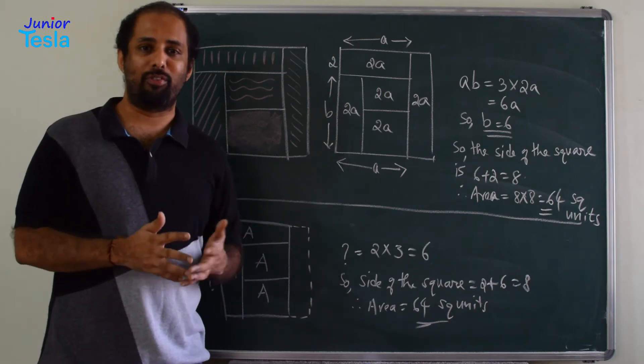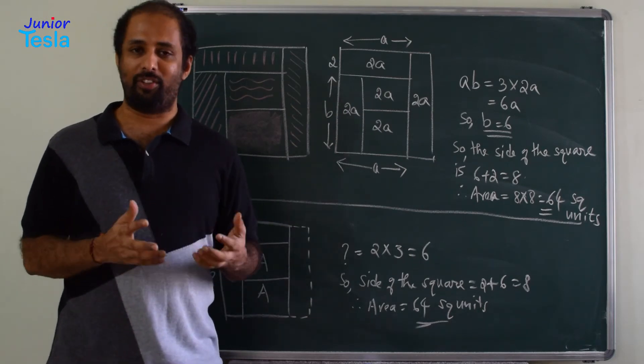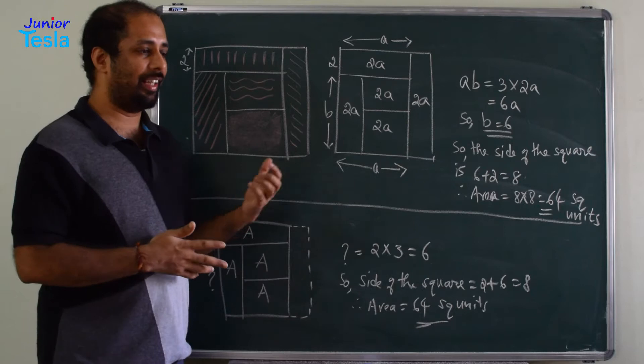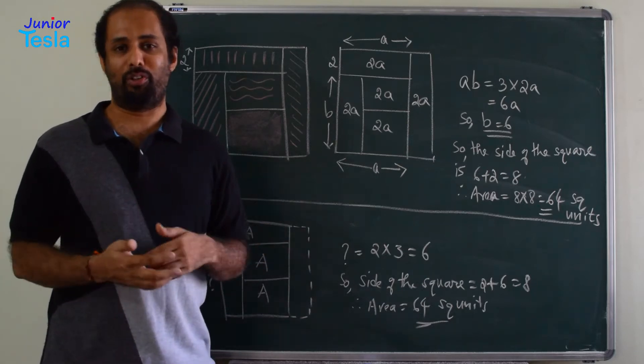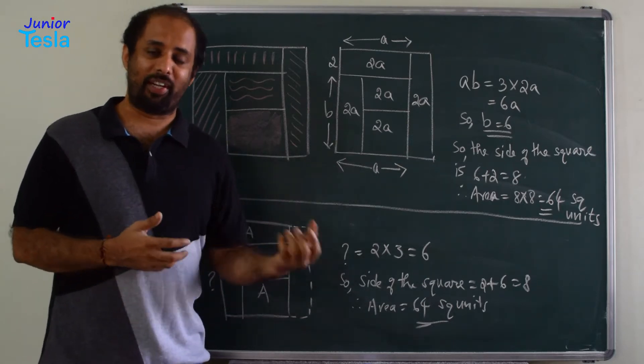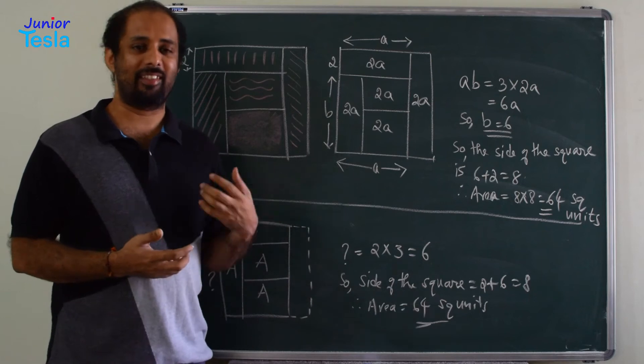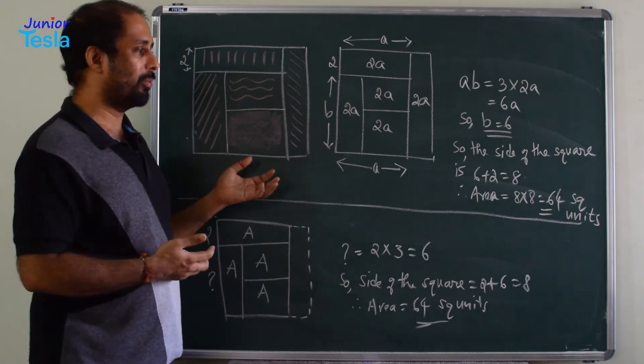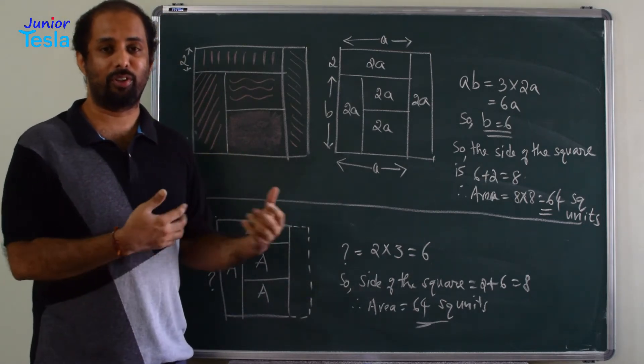You have to find the total area of the square. In our previous two episodes, we had seen three solutions, three different solutions. Here, in this episode, I am going to show you two more solutions, but with a different technique. Let us see how we are going to solve this problem with the two more solutions or two more different ways.